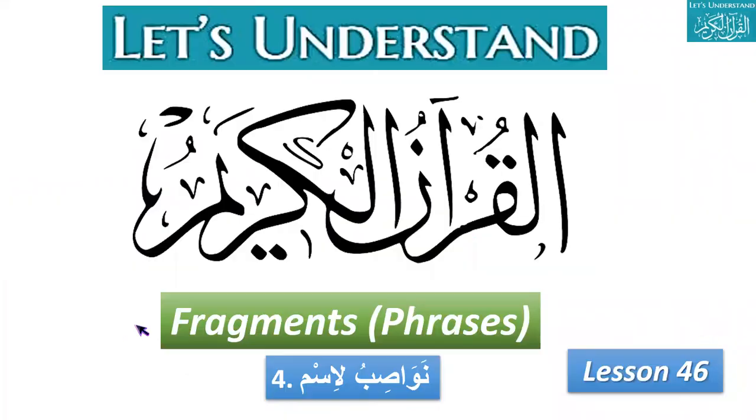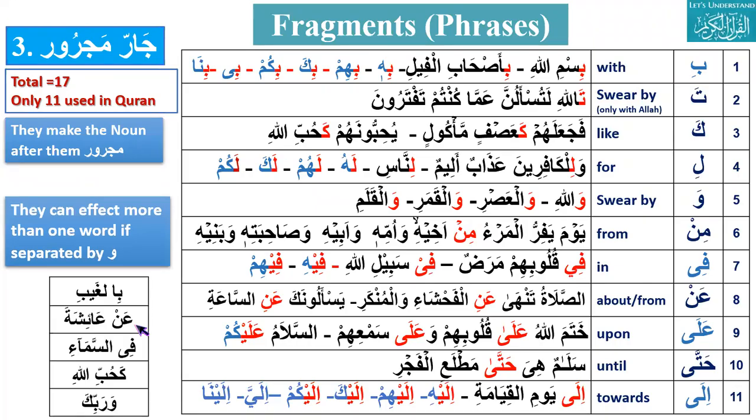This is very important. Just remember: properties of Ism are four. We have each and every step written on the slides. We started with the fragments — Mudaf Mudaf Ilai, Sifa Masoof — and today we discussed Jar Majroor. We just have to go for practice. I request you to revise the previous things for two minutes, then we move to Jar Majroor. Over to breakout room.